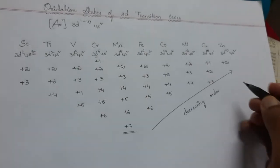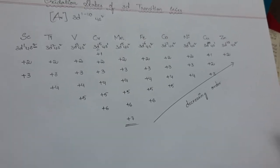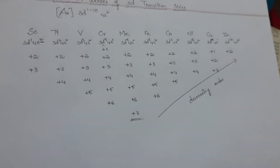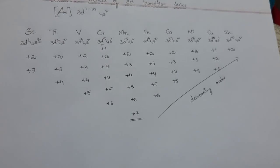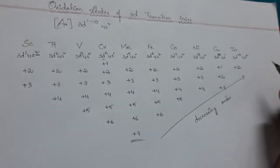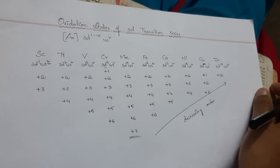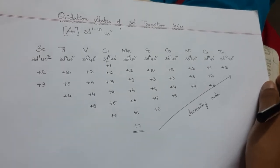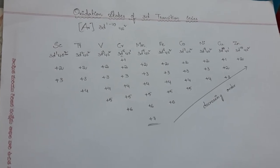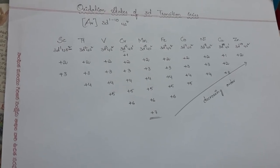The higher oxidation states become progressively less stable because the divalent state becomes dominant. Divalent means an element or ion which has a valency of two — here the dominant divalent element is zinc. These are the oxidation states of the 3d transition series. Thank you for watching — please raise your doubts and opinions in the comment section.